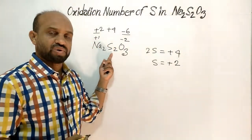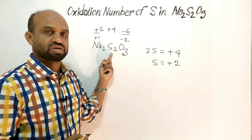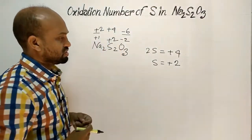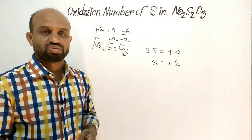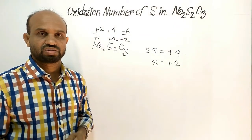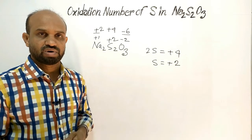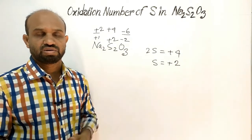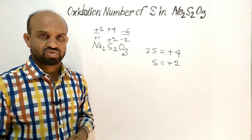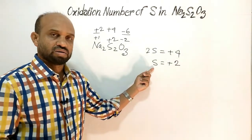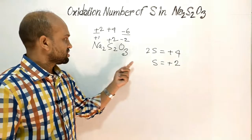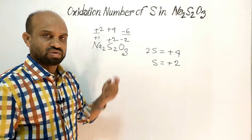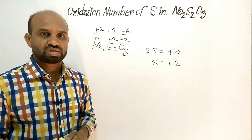Here, as per the general rule, the oxidation number of sulfur is plus 2. According to the definition, the number of electrons donated or accepted by one atom of any element is called the oxidation number. So one atom of sulfur has oxidation number plus 2. But this is not actually plus 2.